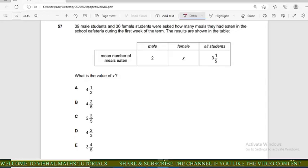Now come to question number 57. In this question we have given that 39 male students and 36 female students were asked how many meals they had eaten in a school cafeteria during first week of term.